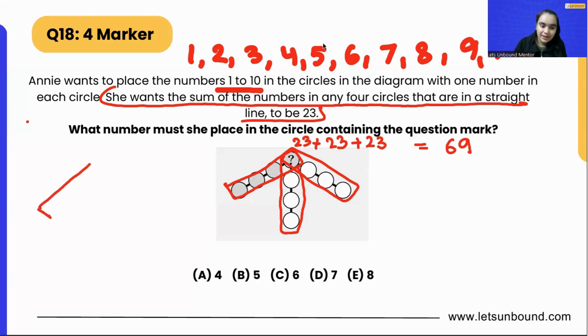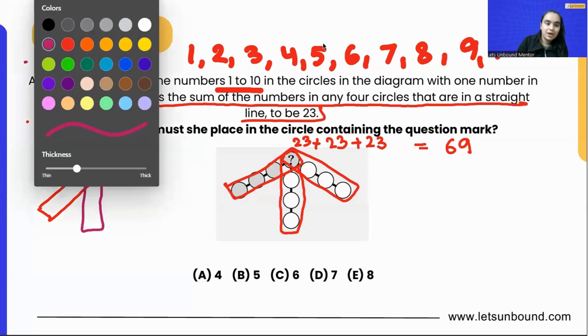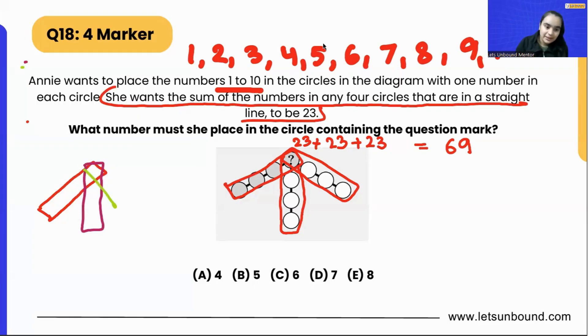What happens is if I am adding this straight line, this straight line, or this straight line, the number which is at the top is getting overlapped. We are adding it thrice. All other circles are unique, which we are adding only once, but the number written here we added it thrice while adding 23, 23, 23.